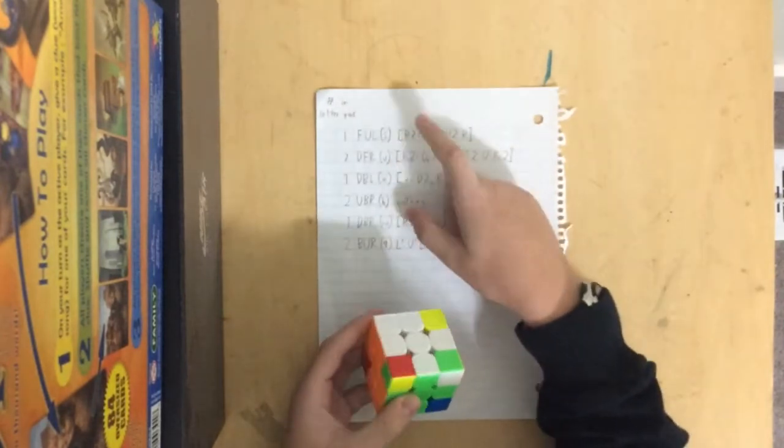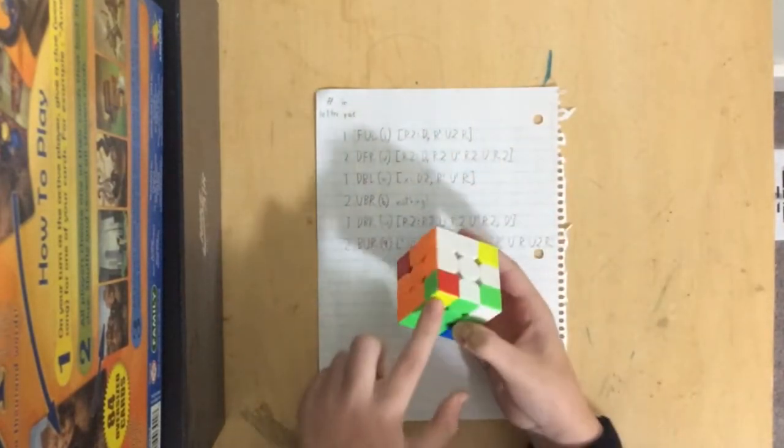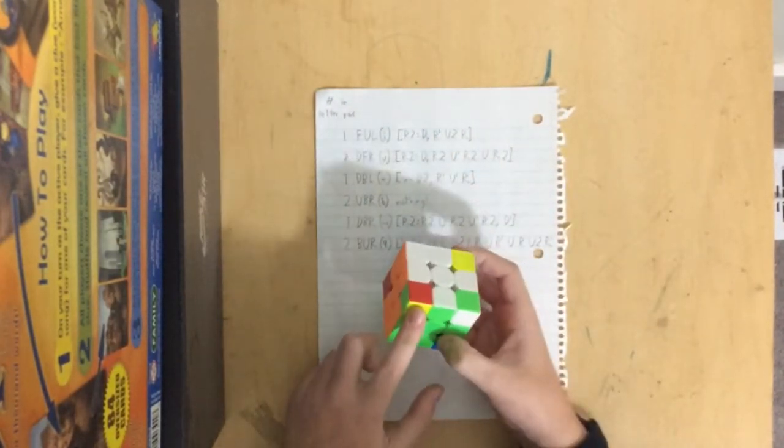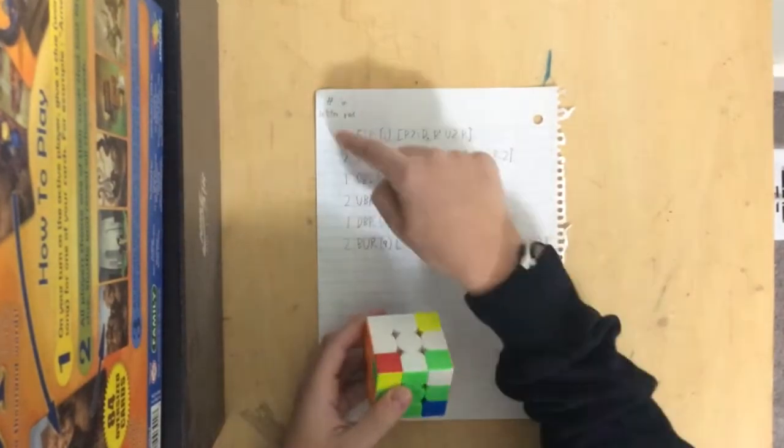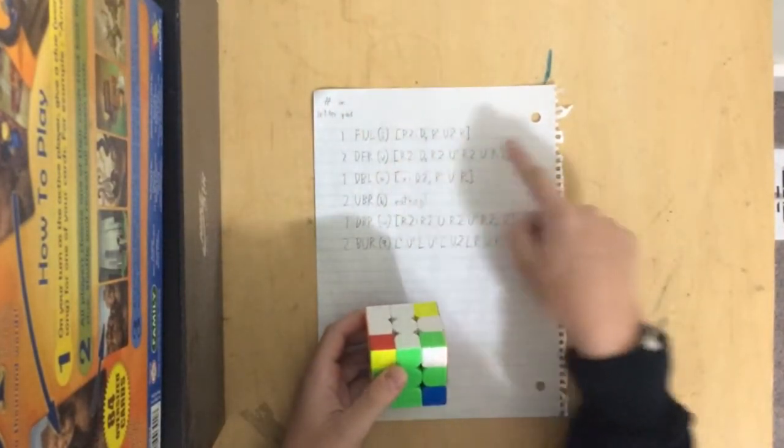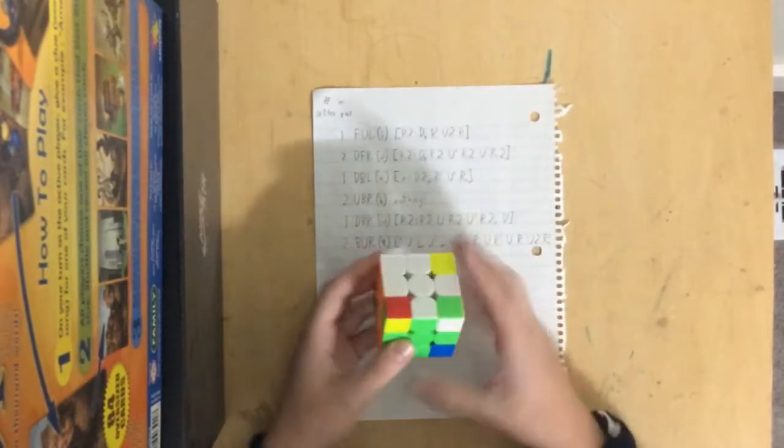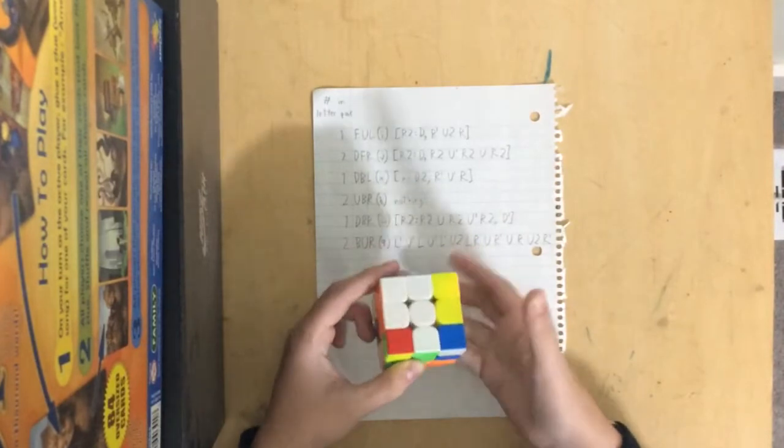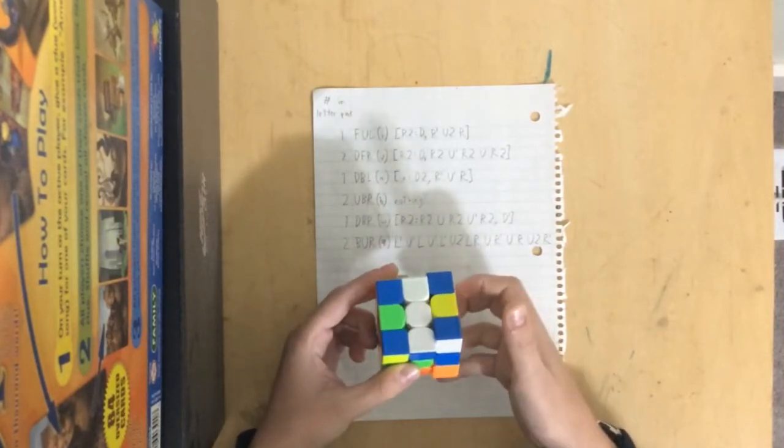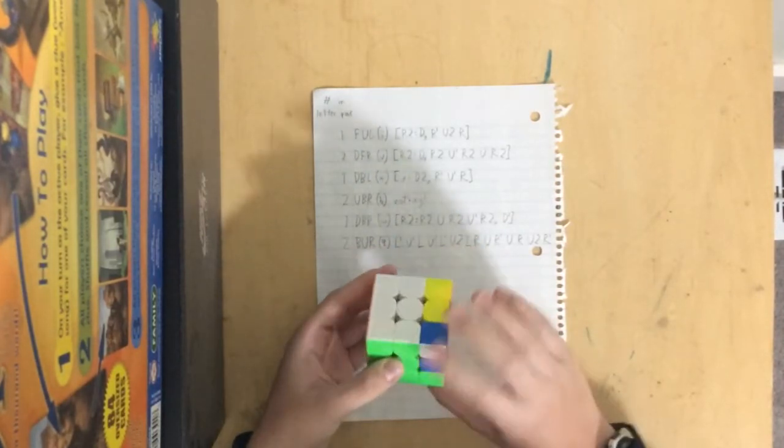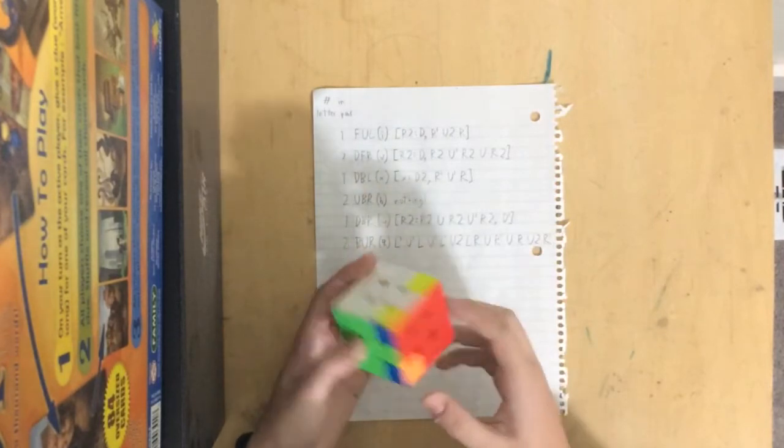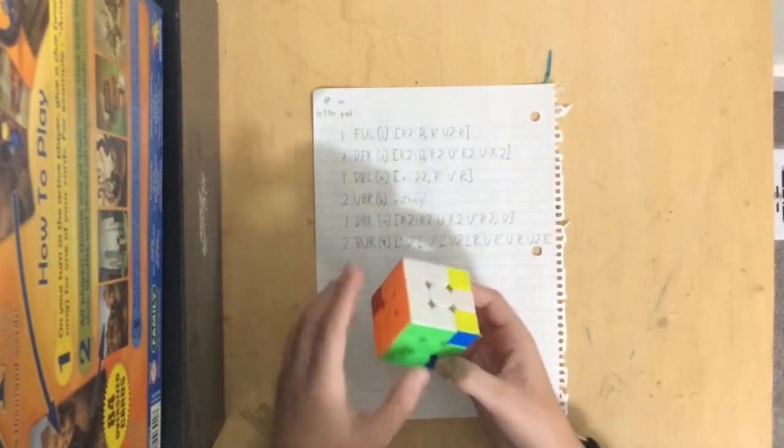So here is our memorization. And so the first thing that we have is FUL, which is the letter I in most cases. So this comes first in the letter pair. So we do the commutator, or actually it's a conjugate. We do it just normally. So we do R2, and then D, R' E2, R, D' R' E2, R, and then R2. And as you can see, that solved this piece.